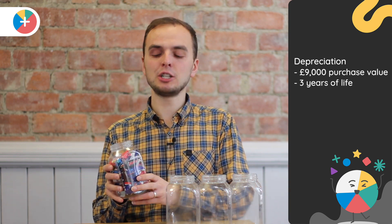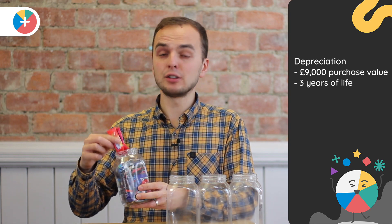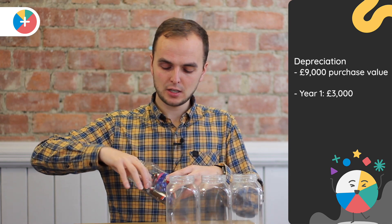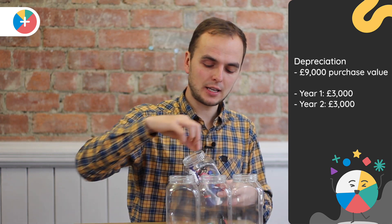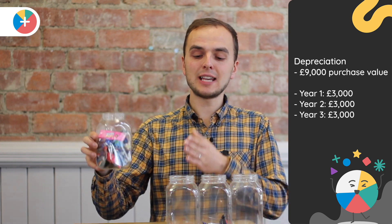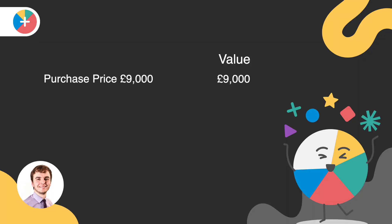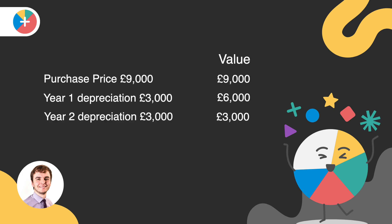For example, if you purchase some equipment for £9,000 that was going to be used for three years within your organisation, you would depreciate a third of the value of that asset every year. So you'd put £3,000 in the first year, £3,000 in the second year, and so on. As each year goes on, the value held on the balance sheet for that asset goes down, until the value of the asset is nil and it no longer has a value on the balance sheet.